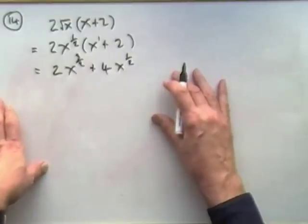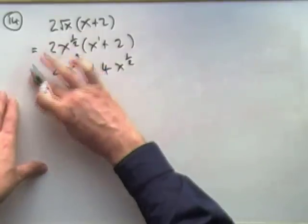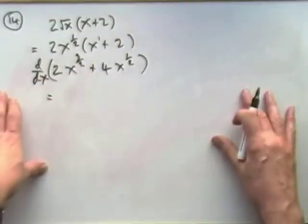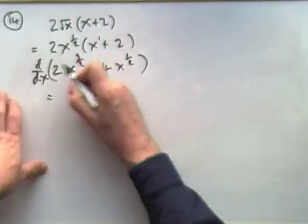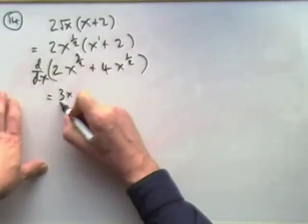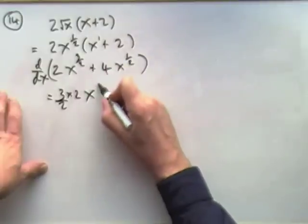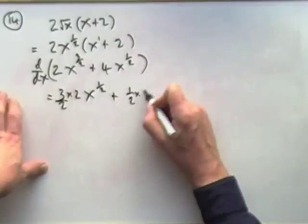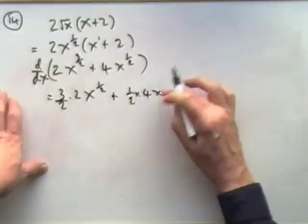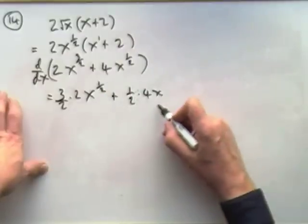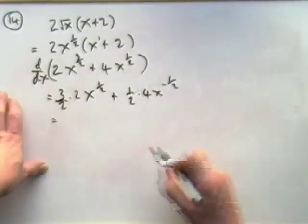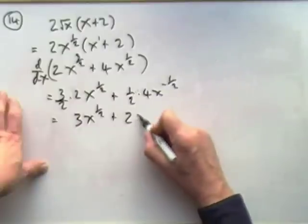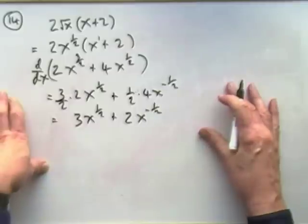Now differentiate. Multiply by the power: three-halves times 2 is 3, then reduce the power to one-half. For the second term, multiply by the power one-half times 4, reduce the power to negative one-half. So altogether that becomes 3x to the half plus 2x to the negative half.